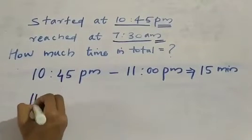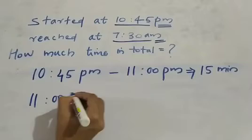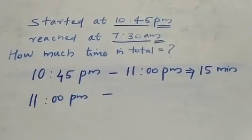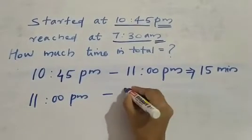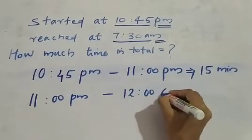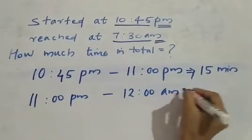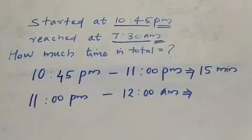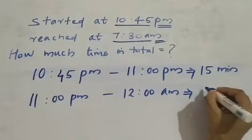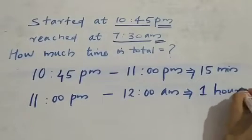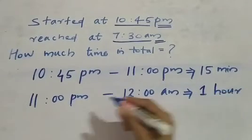11 PM to 12 midnight — that is 12 AM, midnight. So how many hours? 1 hour — only 1 hour from 11 to 12. Now from 12 AM to 7 AM — how many hours? 7 hours.